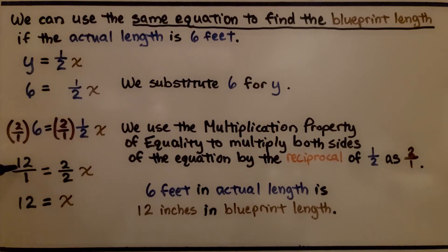We multiply both sides by 2 over 1. And on this side, we get 12 over 1, which is 12. And on this side, we get 2 over 2, which is 1. That's 1x. We know 12 is equal to x or x is equal to 12. 6 feet in actual length is 12 inches in blueprint length.